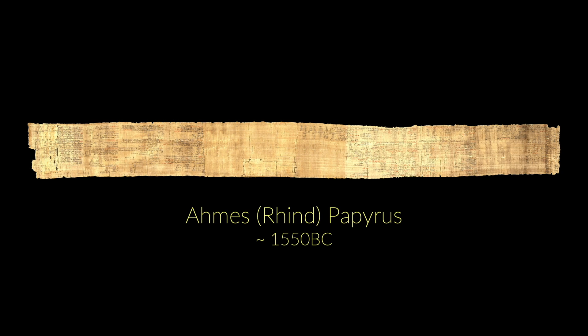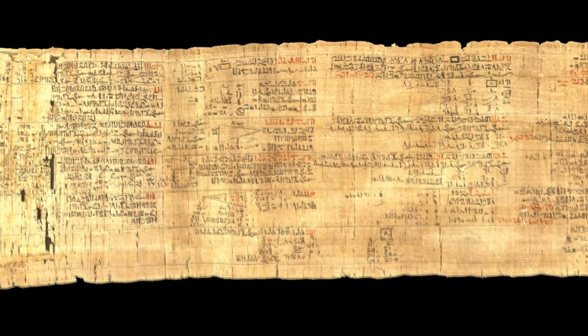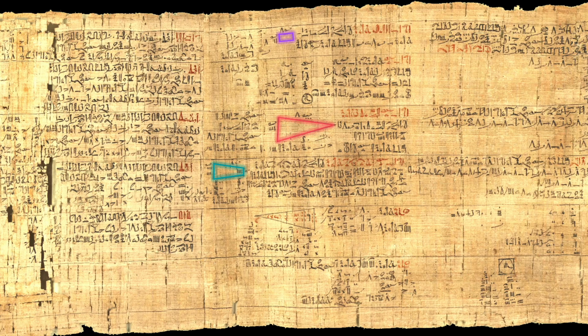Most importantly, the Ahmes or the Rhind papyrus. A 3,500 year old document that contains problems and solutions for calculating areas of different geometric fields.